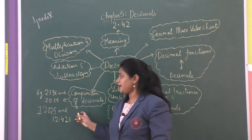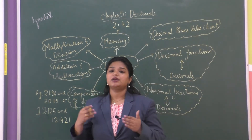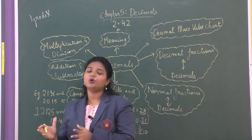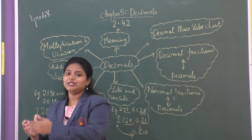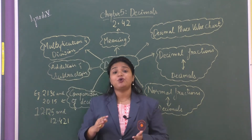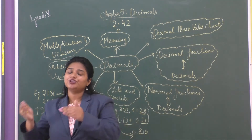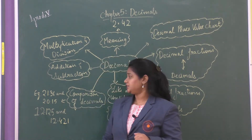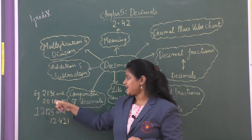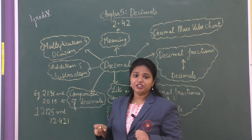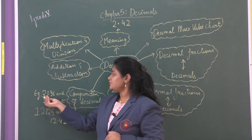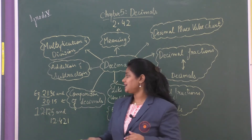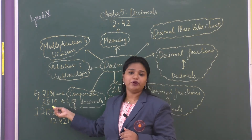Further we learned about comparison of decimals. There are two steps. First, compare the whole number part — if the whole number part is different you will directly get your answer. For example, with 21.36 and 20.15: the whole number is 21 in the first and 20 in the second, so we can directly say 21.36 is greater than 20.15.